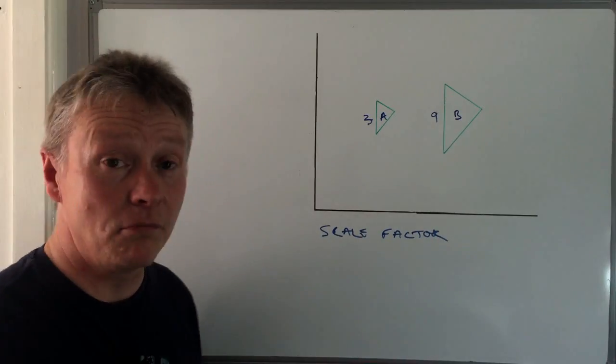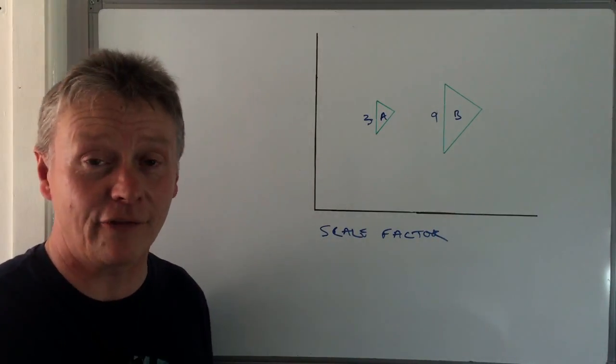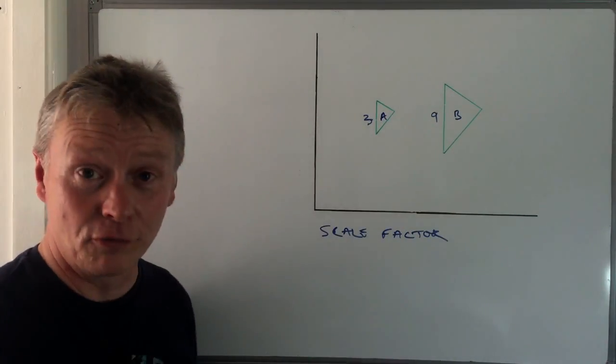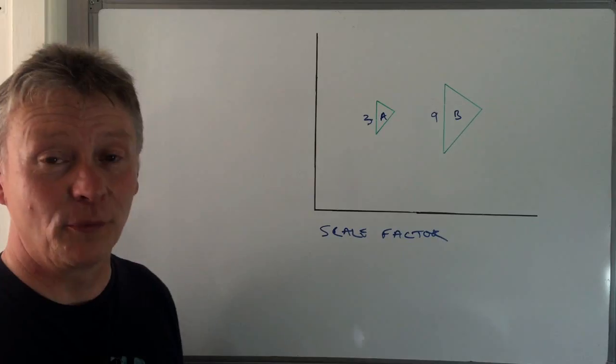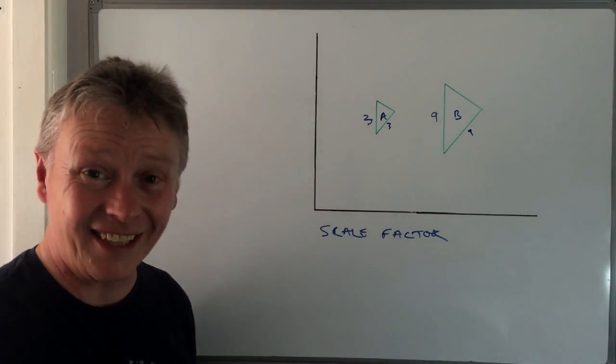And what you'll find is whether you use the straight lines—and most people use those because you can read directly from the graph—or you just use the other lines and use a ruler, then the same thing will hold true. If this is three units, this will be nine. It's exactly the same.